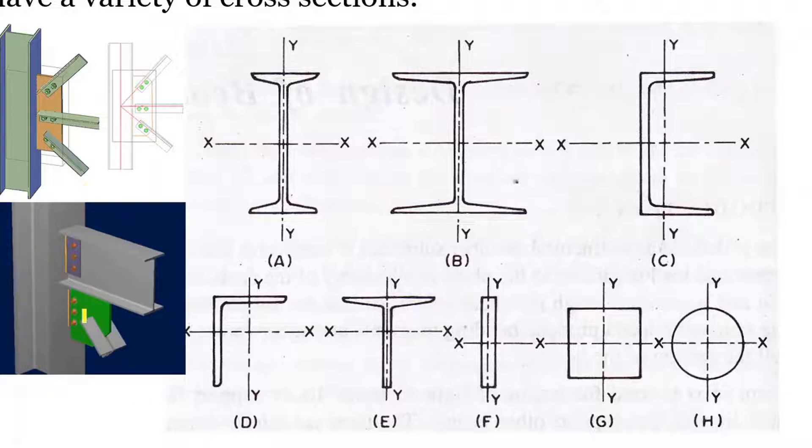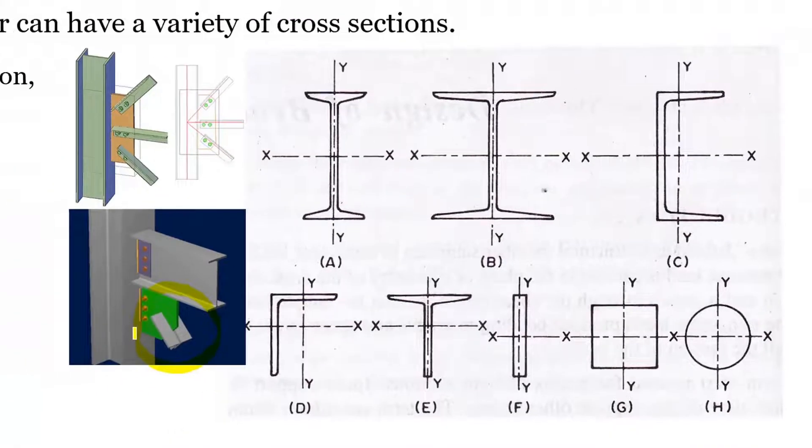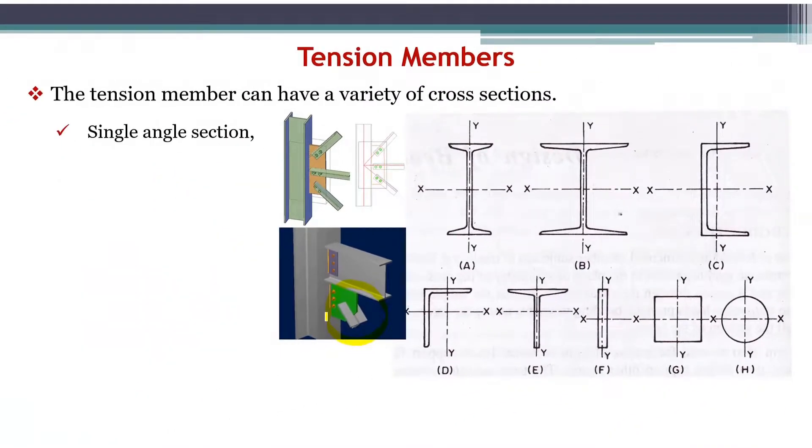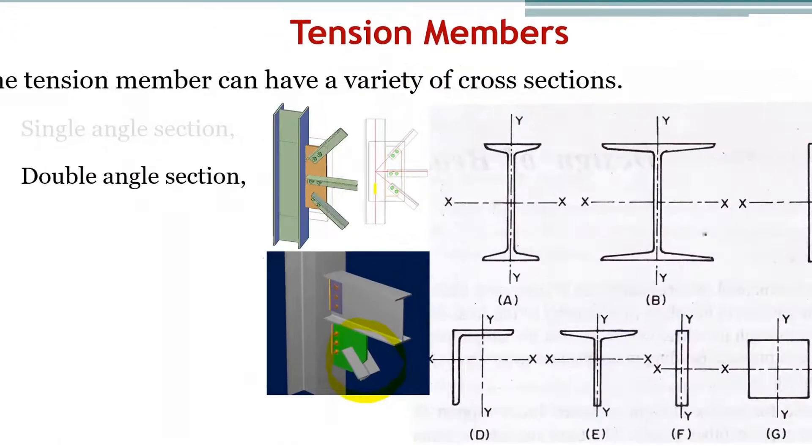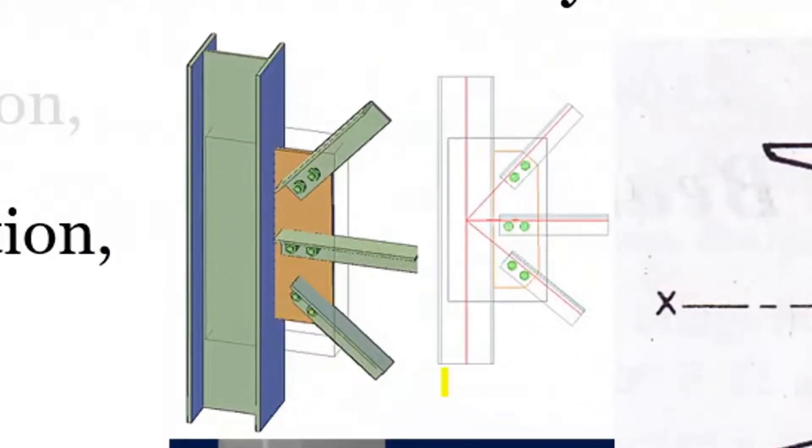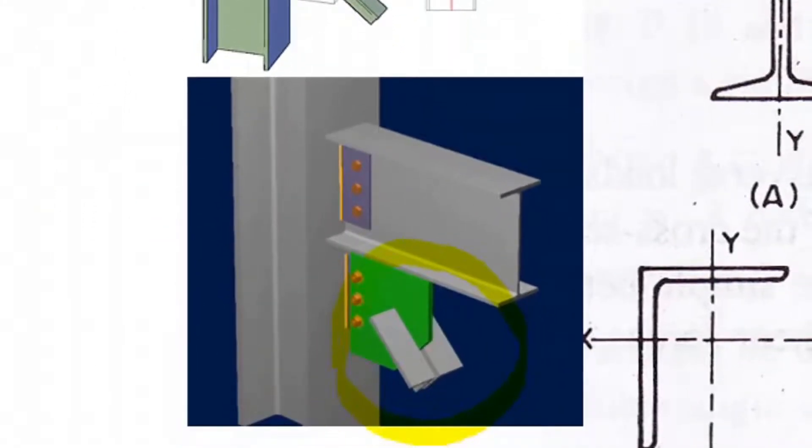Here you can also see two angles connected back to back. If you look closely, we have two angle sections connected together which act as a single tension member. As I mentioned earlier, we can have single angle sections, double angle sections, or three angles where each angle acts as a separate tension member. Here, for a single tension member, we have connected two angles together.